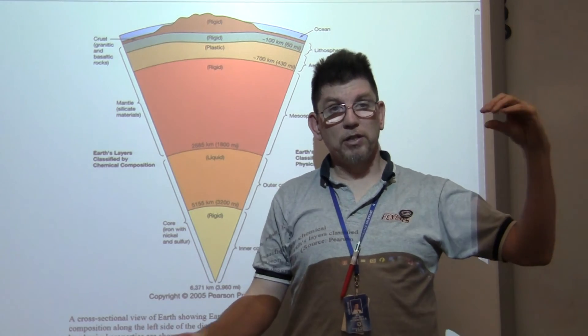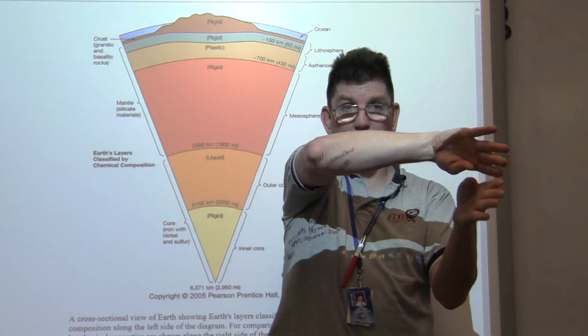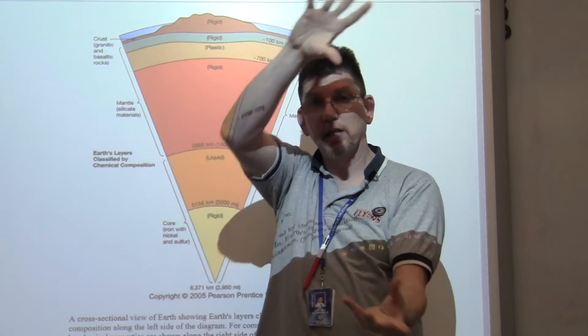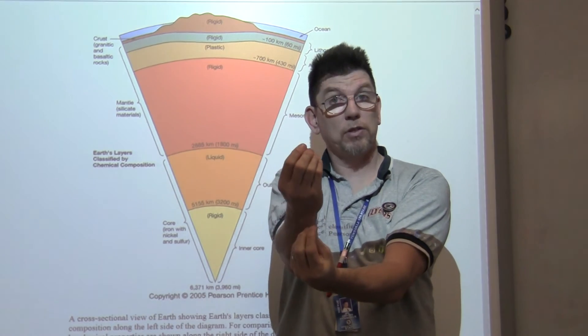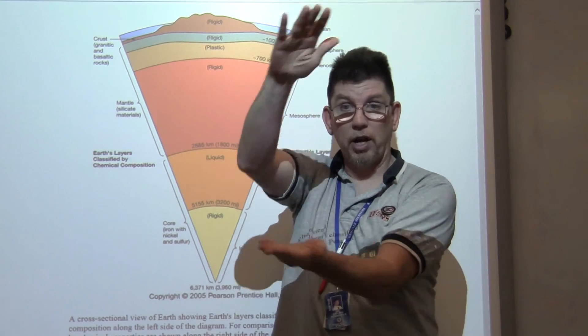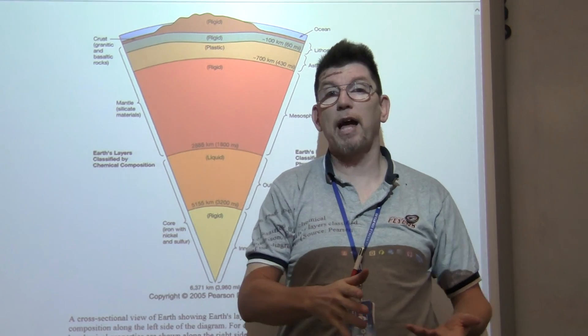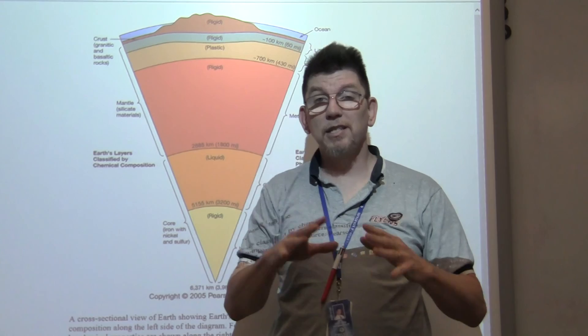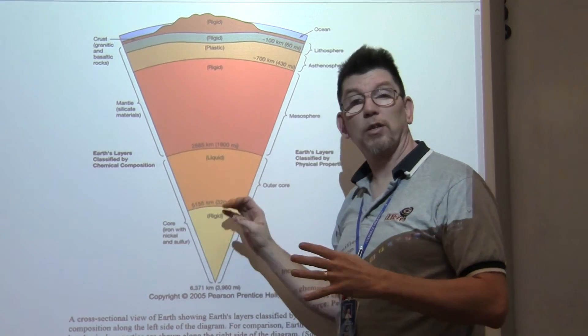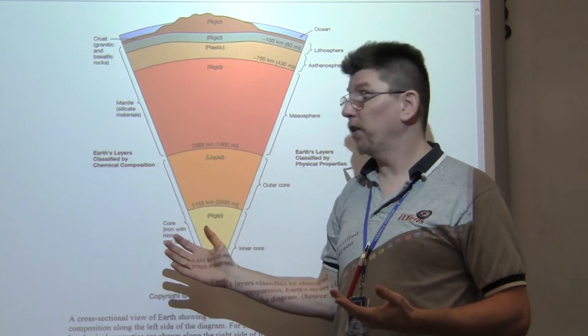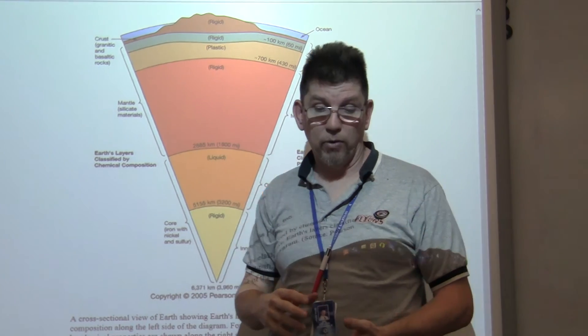As a solar wind approaches the earth, it hits this magnetic field and flows around the earth. Some of it gets sucked in at the poles that cause the northern lights, but most of it gets shunted around the earth and protects our atmosphere from it. So this is extremely important to what's going on and life on earth, this solid inner core, liquid outer core.